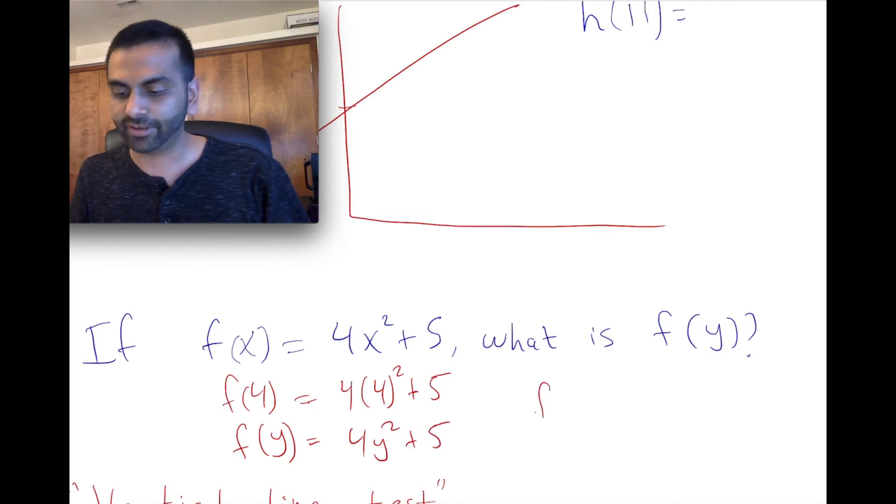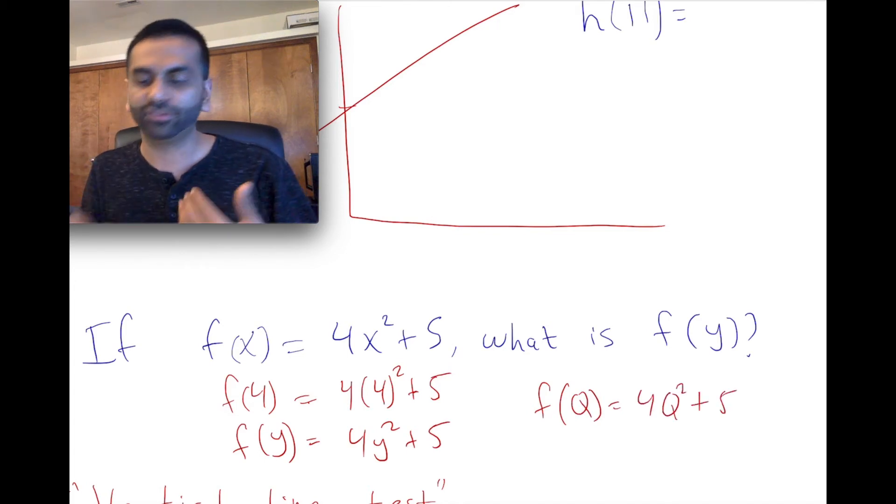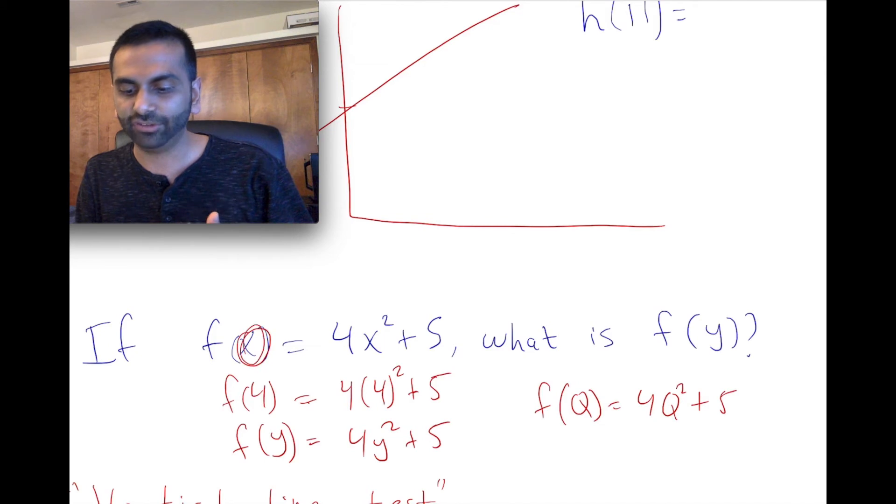If I were to ask you, what's f of q? You'd say that's 4q squared plus 5, right? So again, just getting used to whatever this inside is, you just replace that thing with what you're trying to find.